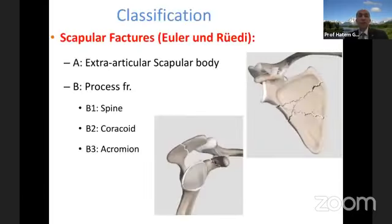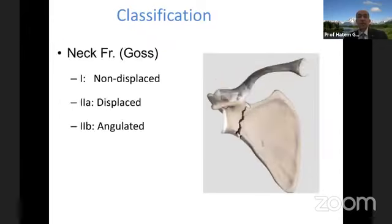When we talk about classification, the older classifications divided fractures into extra-articular — scapular body and process fractures. Then Goss also described neck fractures, whether displaced, undisplaced, or angulated.